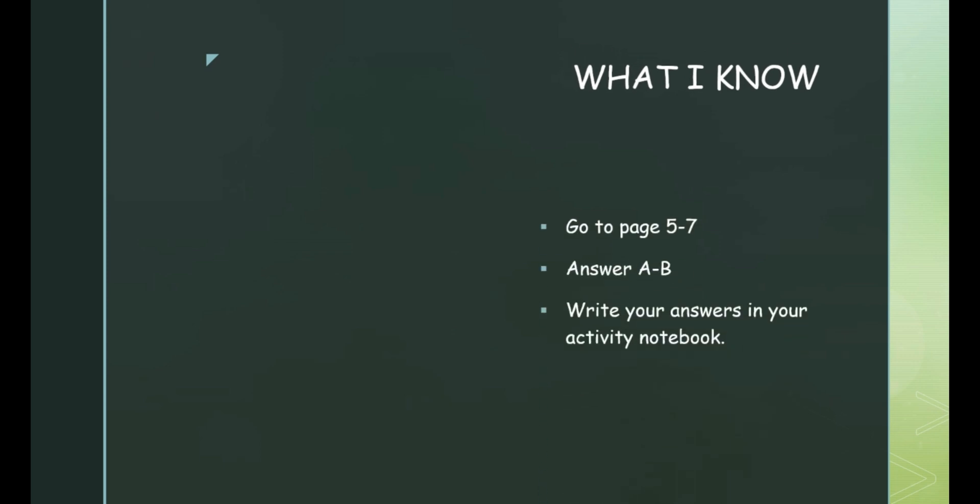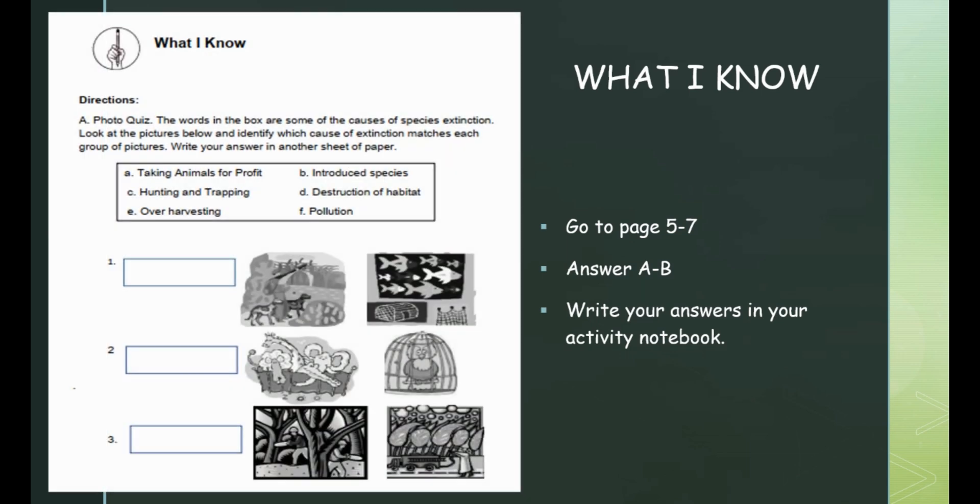Before we go on, let's find out what you know about the topic. Go to page 5 to 7 of your modules. Answer A and B. For letter A, the words in the box are some of the causes of species extinction. Look at the pictures below and identify which cause of extinction matches each group of pictures. Write your answer on your activity notebook.